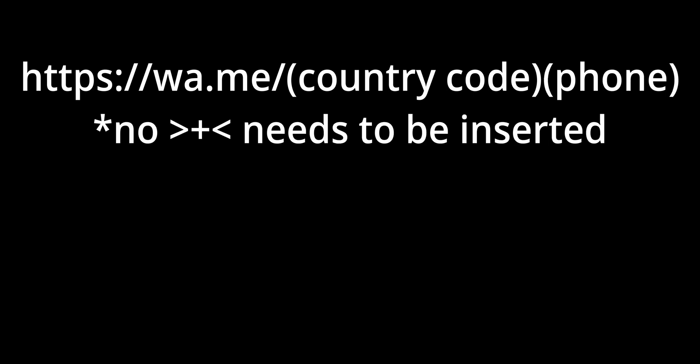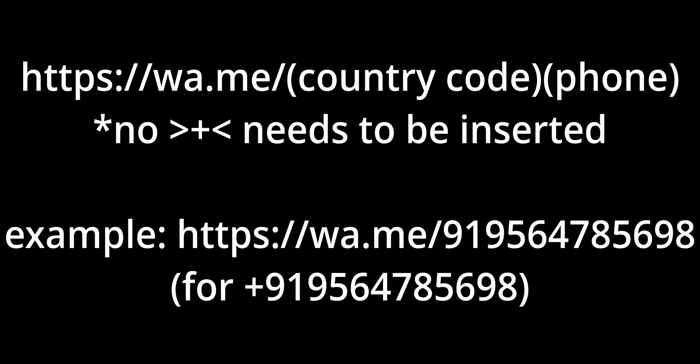I will be showing you on my PC because I don't use WhatsApp on my phone, but the process remains the same. Enter the following URL: wa.me slash country code — in my case I'm using 91 — and then the mobile number without any pluses.